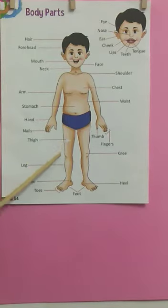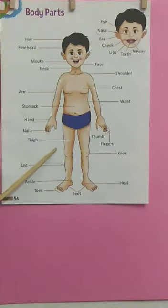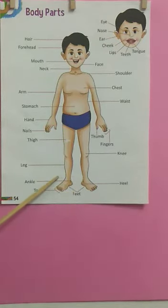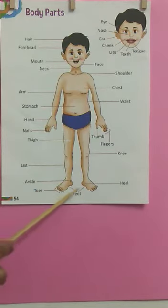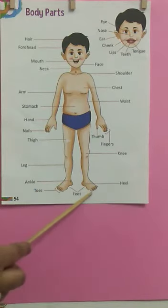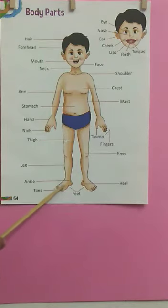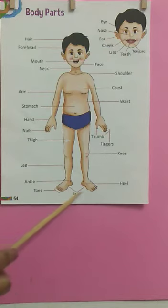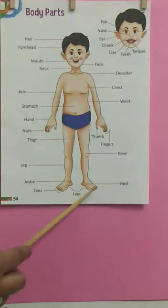Then we have our knees here. Then we have our ankles here — this is called ankle. Then we have our feet, and we have five toes on each foot.